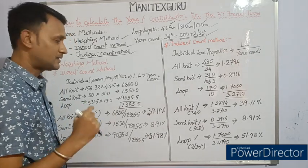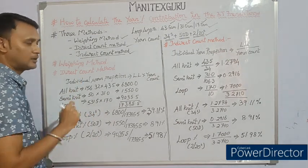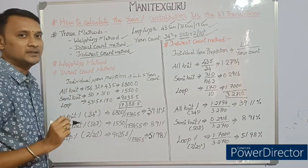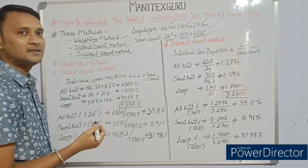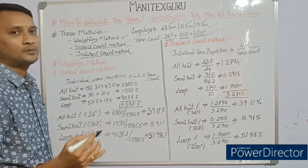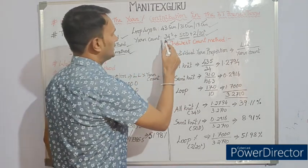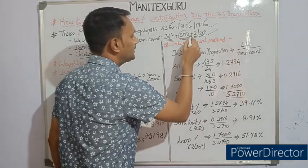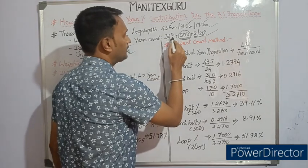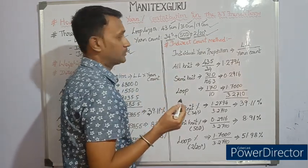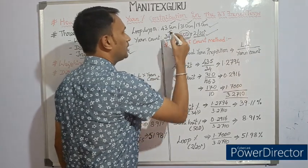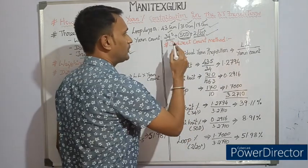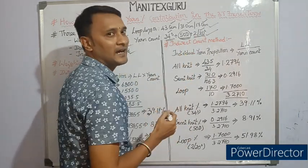Let's see how the direct count method works. In the direct count method, the yarn count used in calculation needs to be in direct count system. In our example, 34s and 2-bar 20s are in indirect count, while 50 denier is already in direct count. So we need to convert 34s and 2-bar 20s — which is equivalent to 10s count — into direct count (denier).